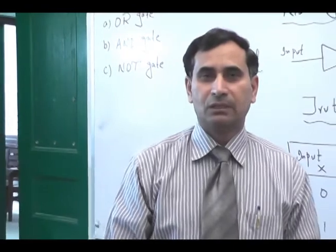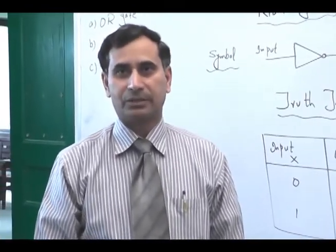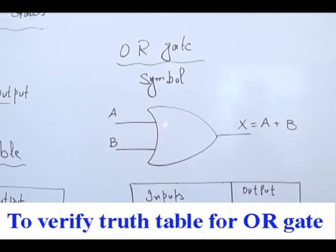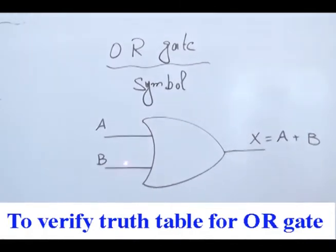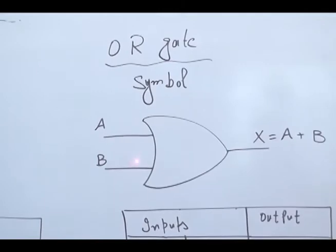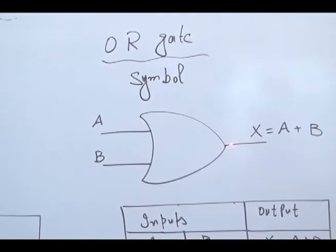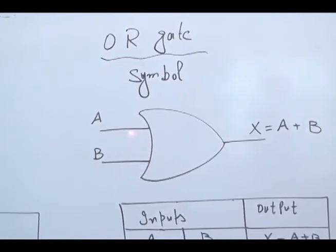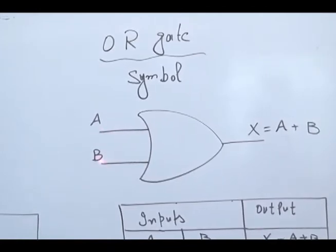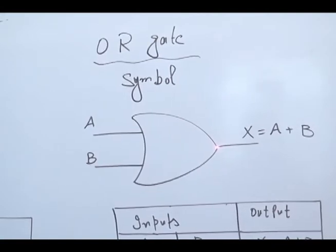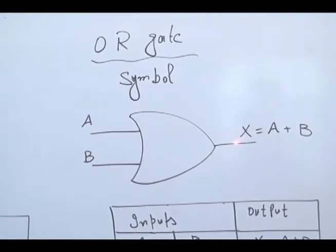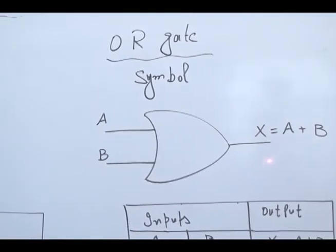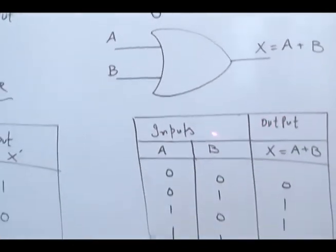Now students, we will see the second gate which is the OR gate. The symbol of the OR gate has two inputs, input A and input B, and one output. Except the NOT gate, all other gates have two or more inputs but a single output. The formula for the output is X = A OR B.